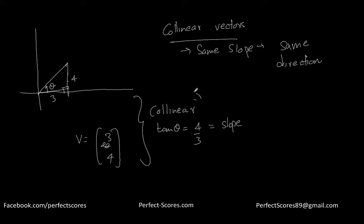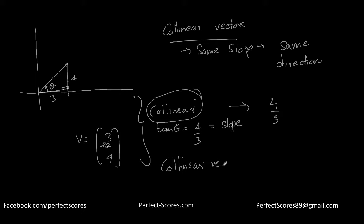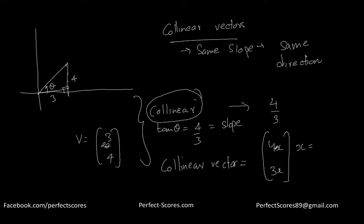Any vector which is collinear to this vector should also have a slope of four over three. So the collinear vector of v is going to have the form (4x, 3x), where x is any number.